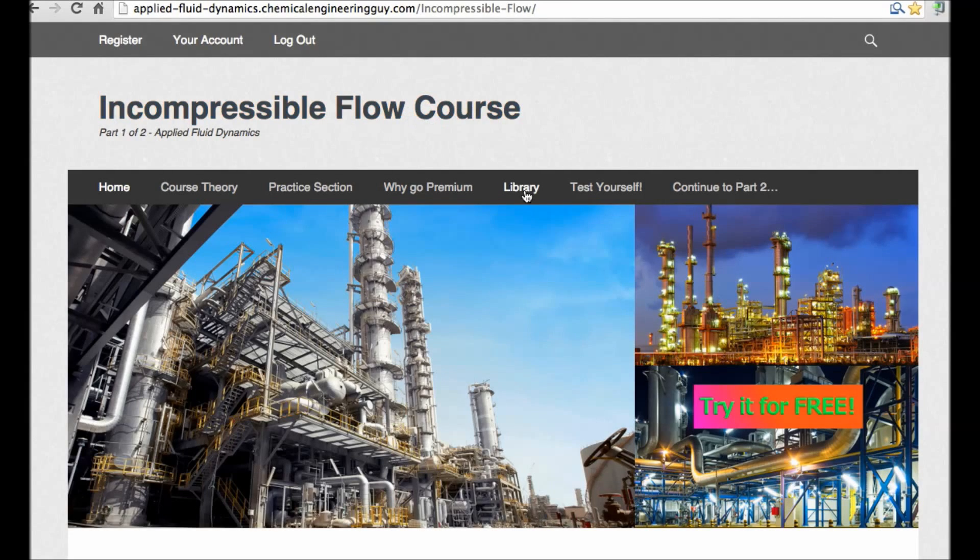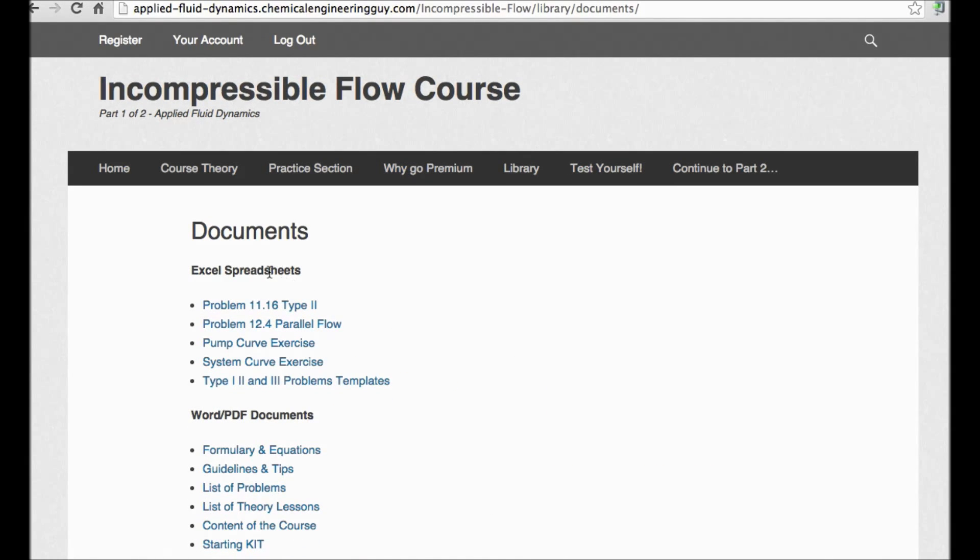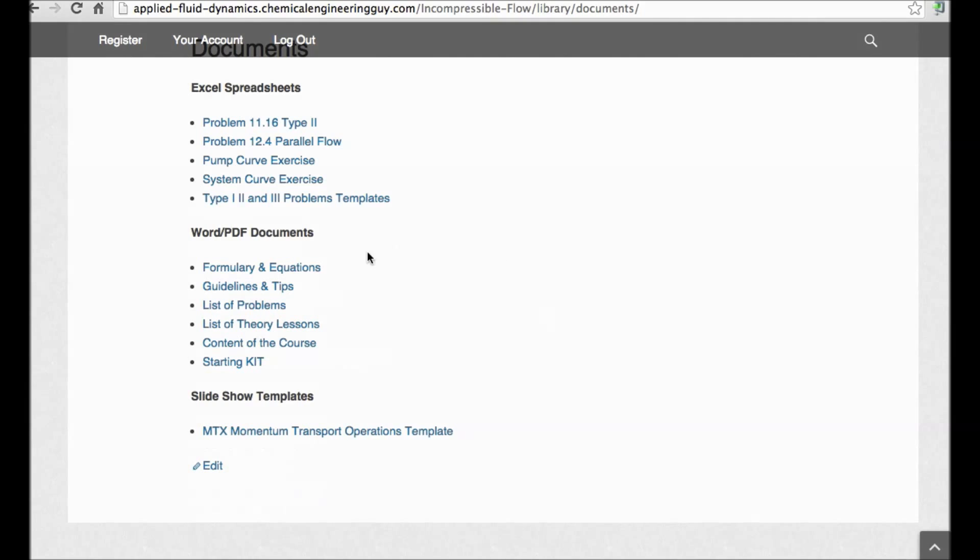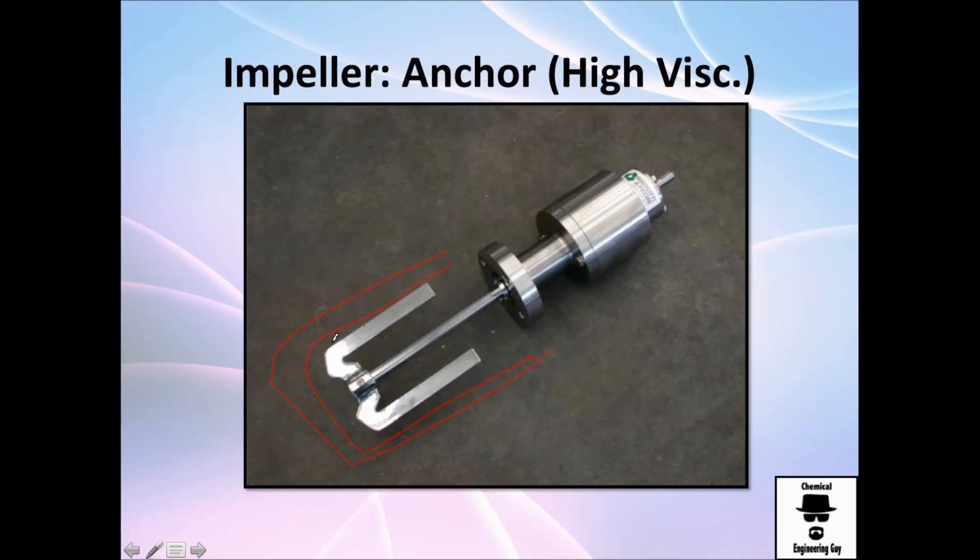One of the benefits of your premium membership is that you can get Excel sheets, Word documents, and even some slideshows. For example, I have plenty of problems in Excel. You can check them and once you get the idea, you'll be able to study and play with the exercises. For parallel flow, what happens when you get plenty of friction in one side versus the other? Or if you're doing a Type 2 problem where you don't have volumetric flow rate, how can you assign cells to get your velocities? You also have system curve exercises and pump curve exercises. You also have access to formulary and equations, so you might print it if you are allowed to take notes for your exam.